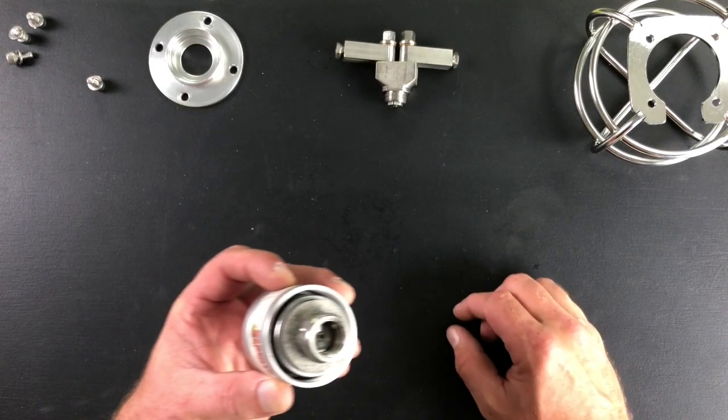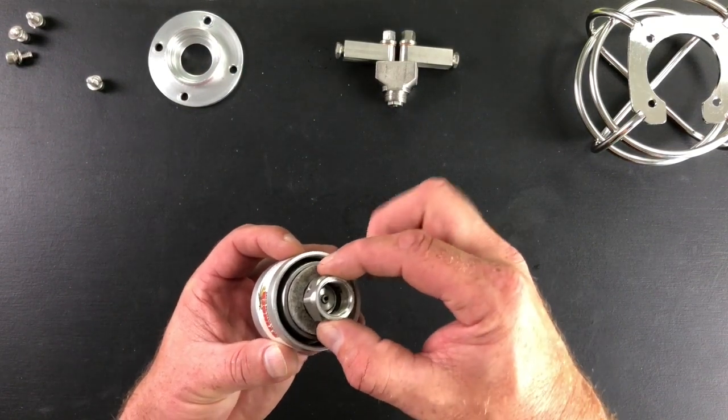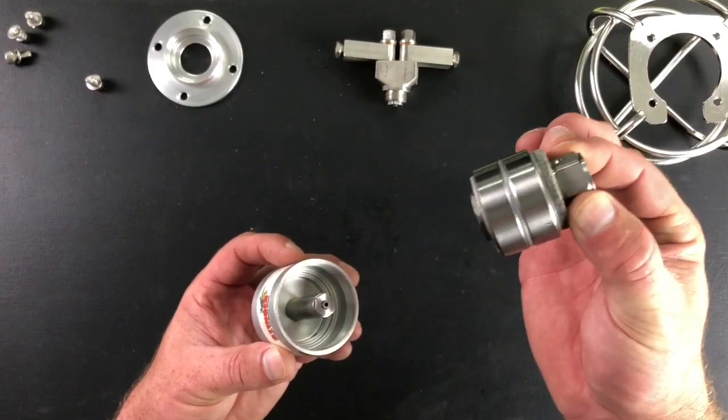Step four, removing the shaft and bearing assembly. Simply lift up on the shaft and bearing assembly to remove it. Note this area may need to be cleaned out before replacement.